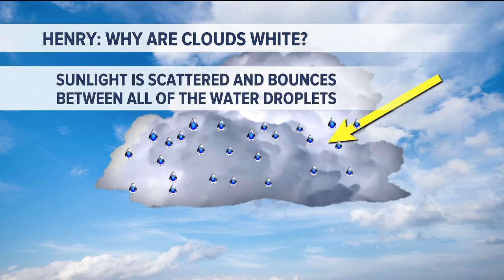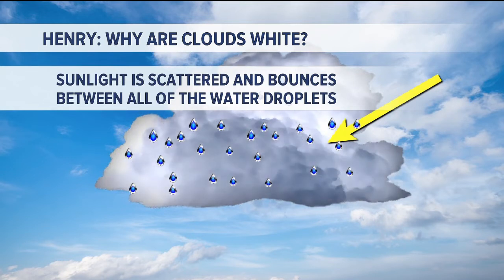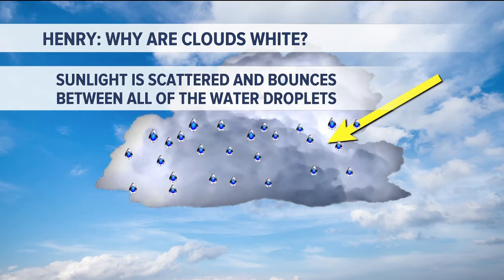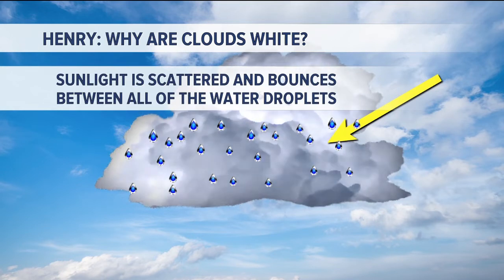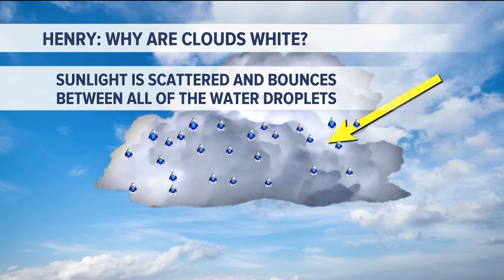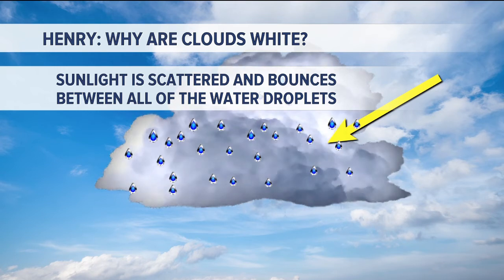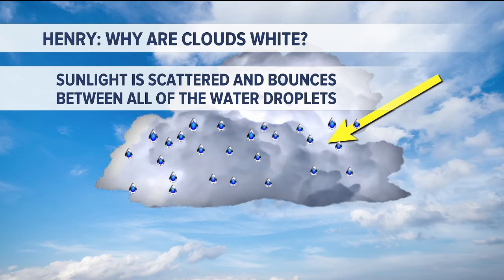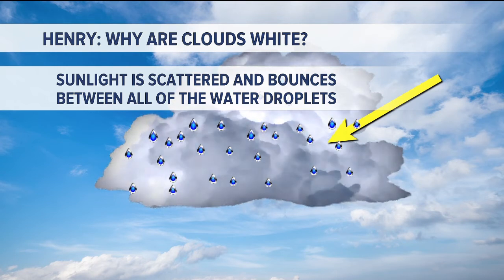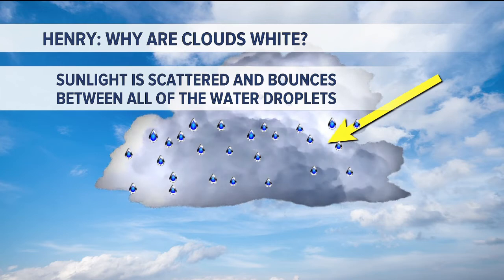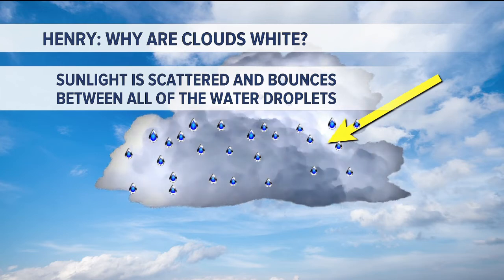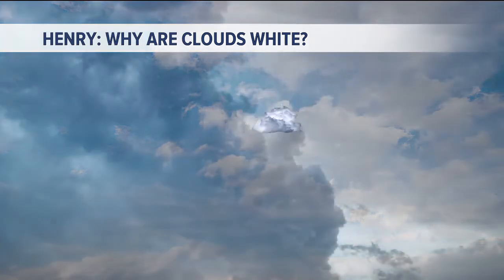It hits another water droplet and then it's scattered and then it bounces. So basically, sunlight is bouncing around between all these water droplets, and the color that you get from that light being scattered by the water droplets is the color white.